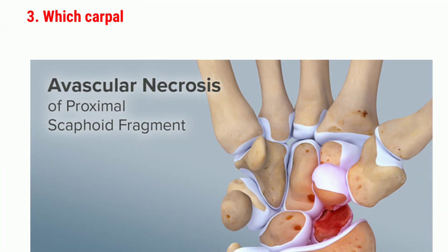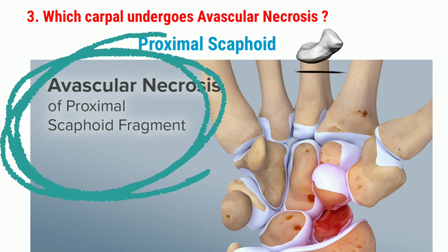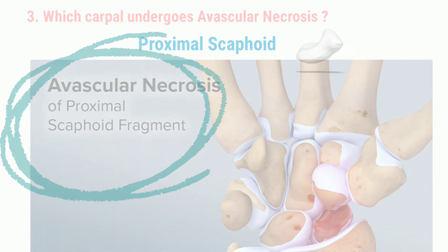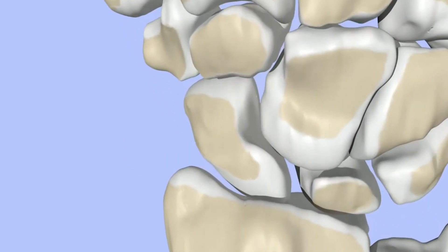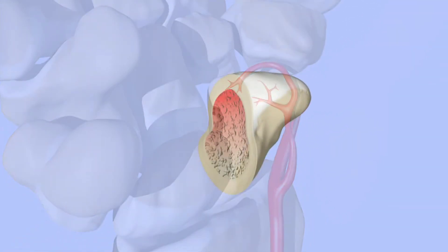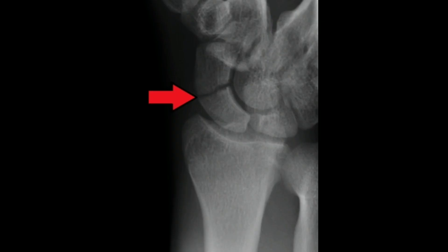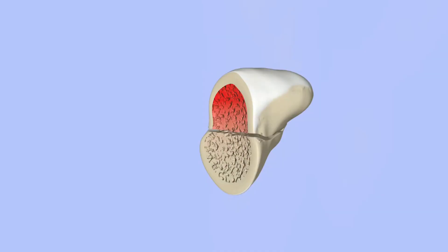Avascular necrosis can occur in case of a scaphoid fracture — always remember it happens in the proximal scaphoid, which is very important for exams. Blood vessels enter the scaphoid from the distal end, so blood supply is more plentiful distally. When there is a fracture, blood supply is interrupted towards the proximal scaphoid, and without appropriate nourishment, the proximal scaphoid begins to die — this is called avascular necrosis.